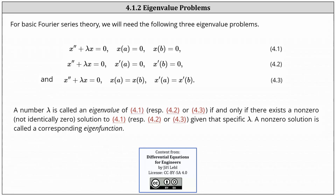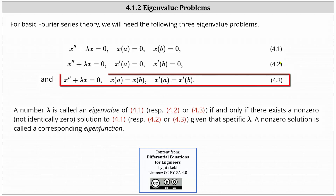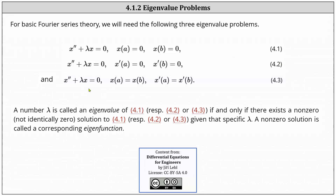We now know that for the basic Fourier series theory, we need the following three eigenvalue problems. In the last two lessons, we solved problems in the form of 4.1 and 4.2. In this lesson, we'll determine the eigenvalues and eigenfunctions of a problem in the form of 4.3. Recall that a number lambda is an eigenvalue if and only if there exists a nonzero solution to the problem given that specific lambda. A nonzero solution is called a corresponding eigenfunction.